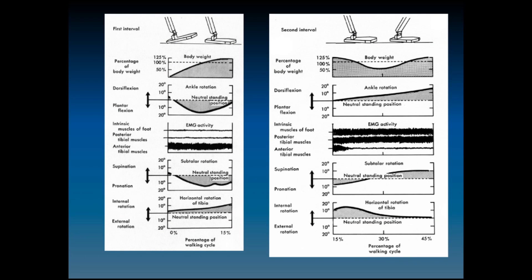This is shown in the graphs from Roger Mann's book. The first interval is on the left, the second interval is on the right. During the first interval, percentage of body weight goes from zero to rapidly greater than 100% in the first interval. As heel strike occurs and then you go up on the toe, the percentage of body weight during the second interval reduces.